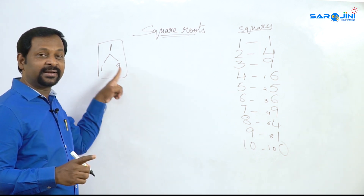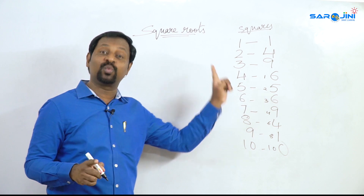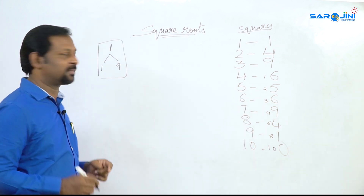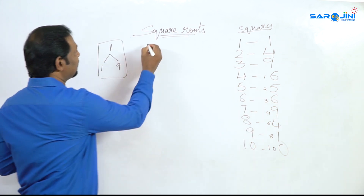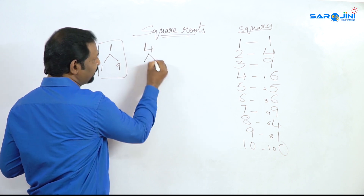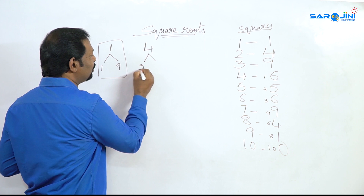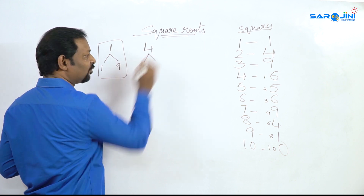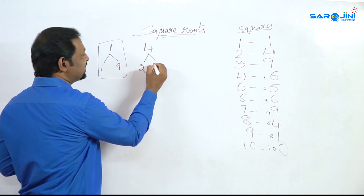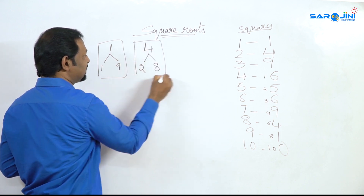1 into 1 is equal to 1. 9 squared is equal to 81 — that means 1 appears a second time. So 4: what does 4 mean? 2 into 2 is equal to 4. 8 into 8 is equal to 64 — that means 4 is the unit digit for both 2 and 8.